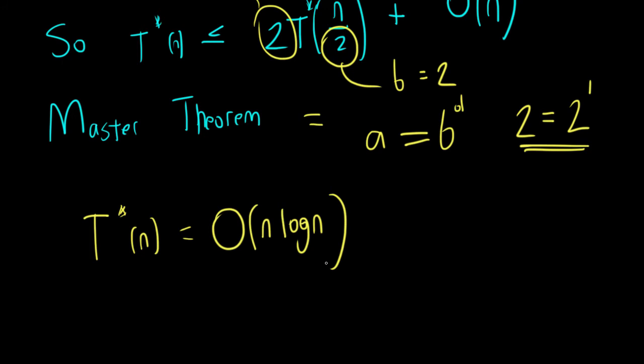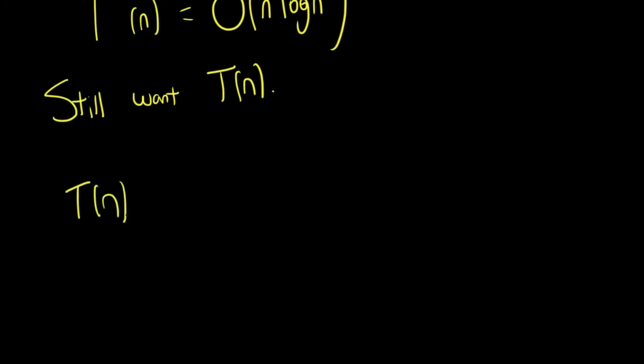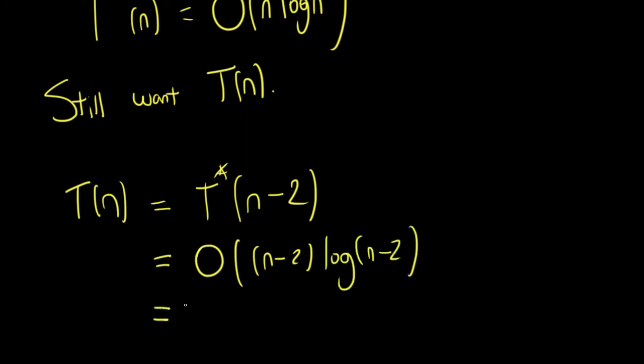But we wanted T(n), right? We still want T(n). So how exactly are we going to go over and get that T(n)? Well, here we go. Simple enough. T(n) is equal to T star(n) minus 2, which is reversing the original relation that we had. So this essentially is going to be big O of (n minus 2) multiplied by log(n minus 2). And this is going to be the same thing as just straight up N log N. Those extra twos that we are subtracting are not going to matter. They're not going to be affecting us.